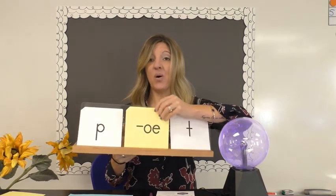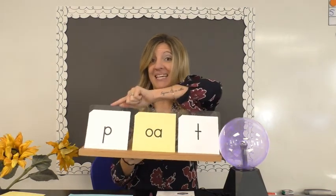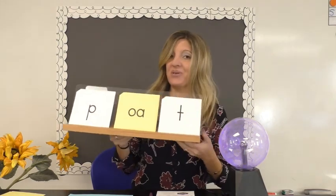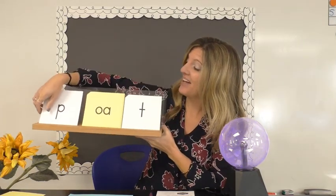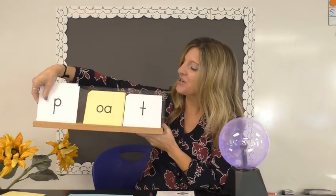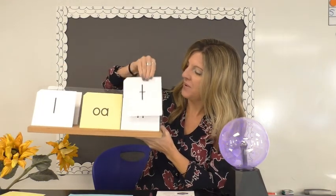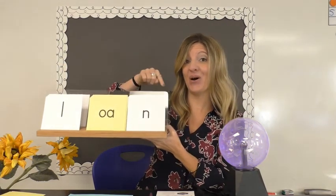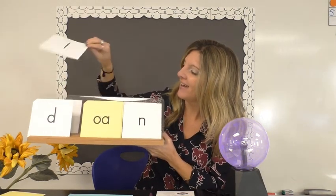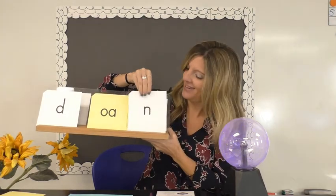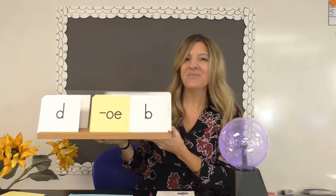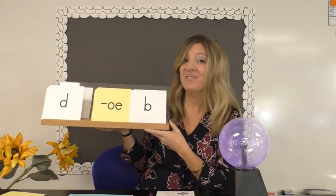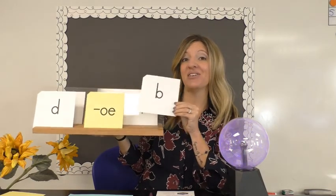Let's take a look at how this would look on our blending board. We said we can only use OA at the beginning or middle of a word, so this word would say 'oat.' I could also have OA at the beginning of the word — this would say 'oh.' Let's try a few more: this would say 'loan,' and this would say 'don't' and 'dove.'